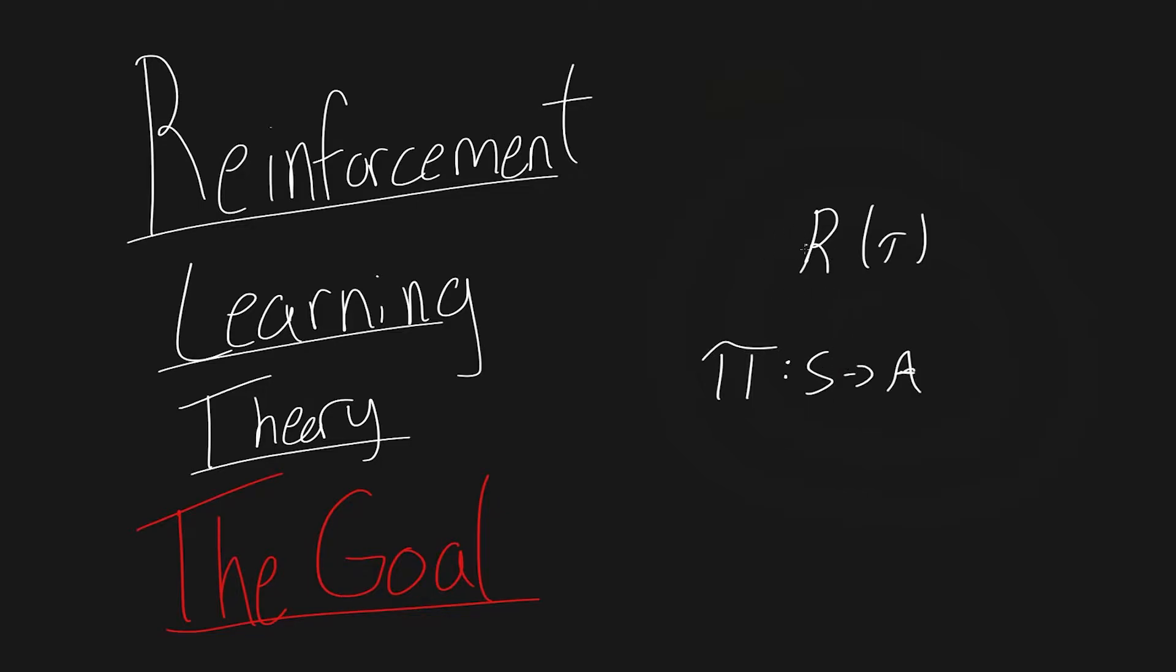And this remember denotes, it essentially maps from a state to an action. It tells us what actions we should take in specific states. And you can imagine if we have a good policy, well, then we're going to get good returns. So essentially, what we want to do here is we want to maximize the expected return. So this is going to be our objective right here, the expected return over all the trajectories sampled from this policy.